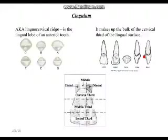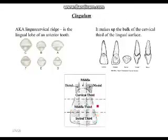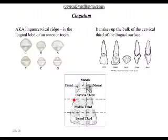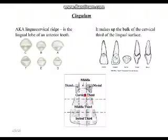Any tooth in the oral cavity — permanent or primary, anterior or posterior — is divided into three thirds: cervical third, middle third, and incisal third. The incisal third is closest to the incisal edge. The middle third is sandwiched between them. The cervical third is closest to the root and gingival. The cingulum is confined to the cervical third.